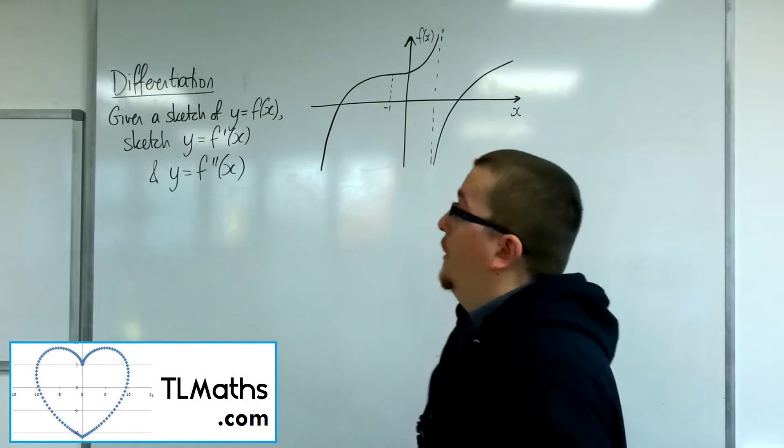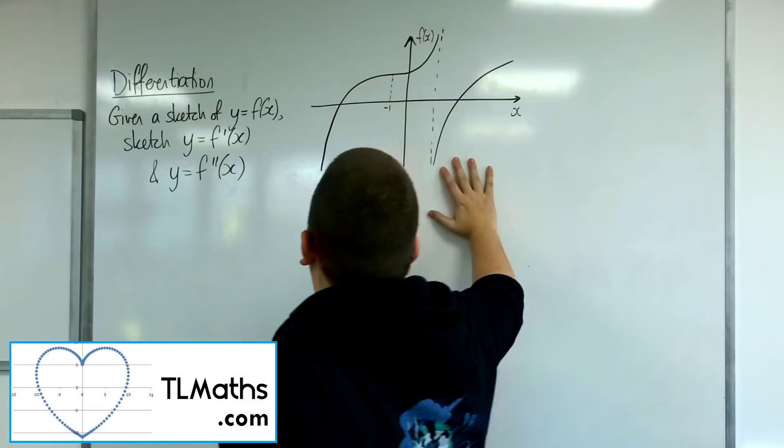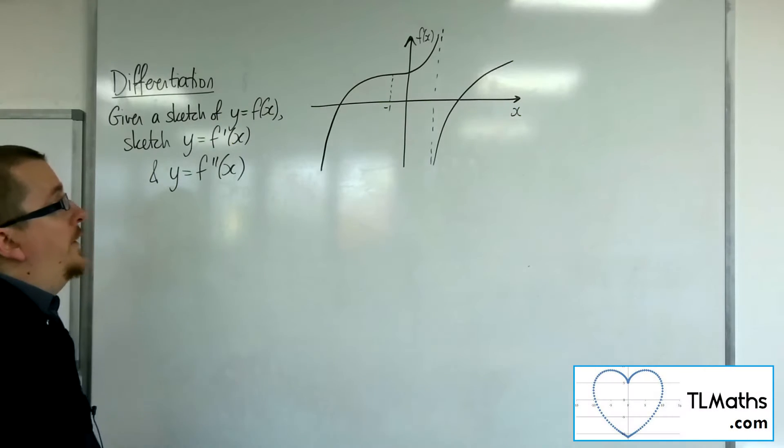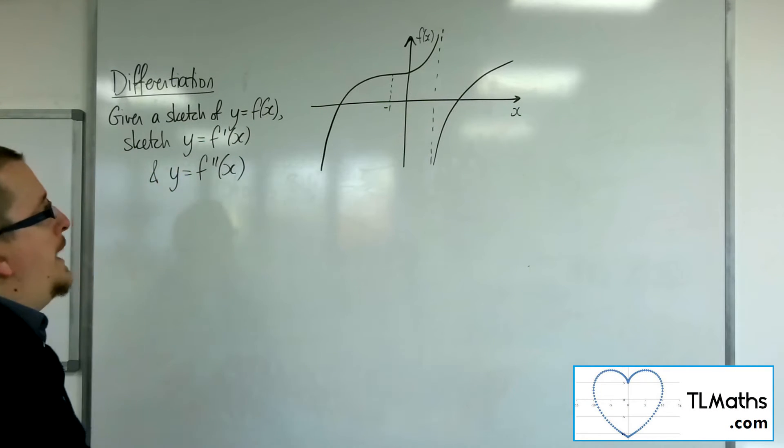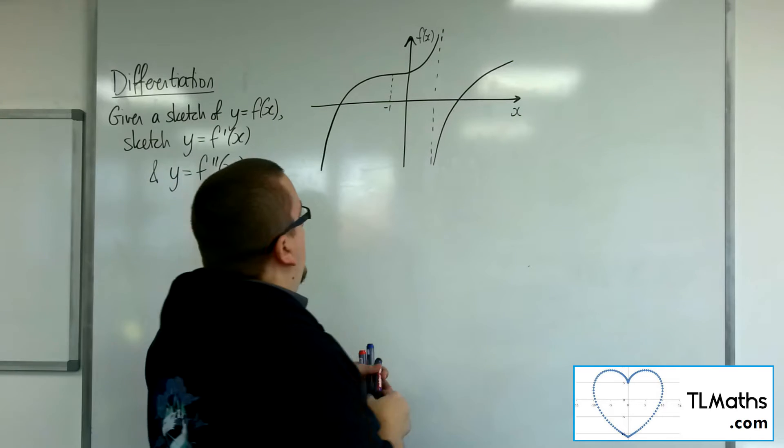So we're going to look at one more example, and this is the curve that we're going to be looking at for f of x. And we'll notice that this one has a vertical asymptote. So how are we going to deal with that?